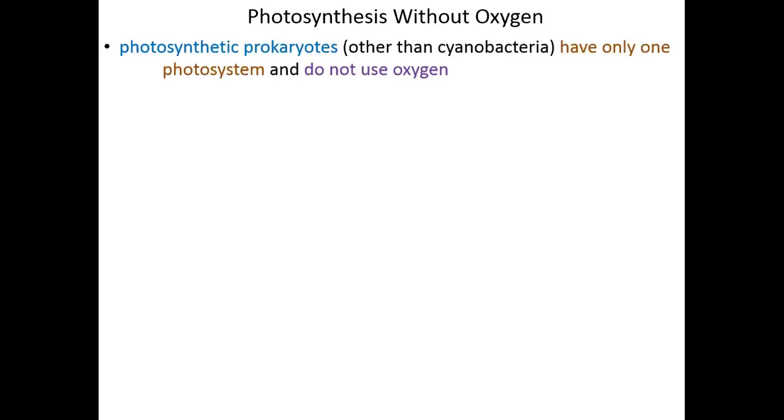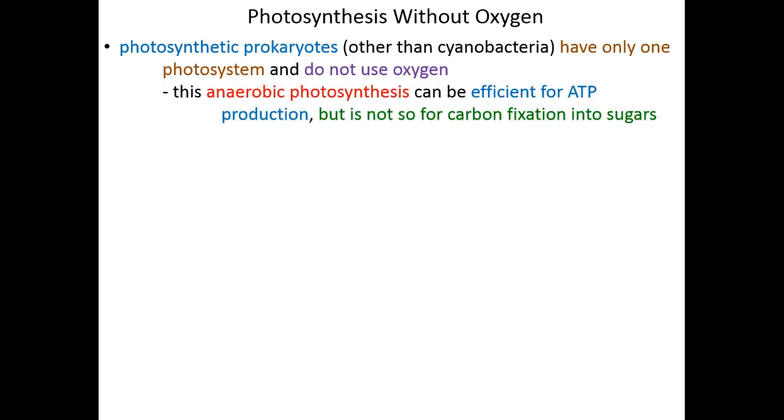Photosynthesis without oxygen really refers to primitive photosynthetic prokaryotes, prokaryotes other than cyanobacteria that can make energy for themselves, but really don't use a photosynthesis oxygen-dependent process. We call this anaerobic photosynthesis because it's photosynthesis that can occur in the absence of oxygen, and it's efficient for ATP production, but it really can't be used for making sugars, so that's why we can't really refer to this as true photosynthesis, because there's no carbon fixation, there's no dark reactions.